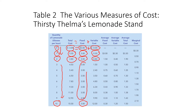The fixed cost remains 3 in all cases because it does not change with quantity. For 10 units, the variable cost is 12, so total cost equals 15. This is how we calculate total cost. As we produce more lemonade, the variable cost keeps increasing.